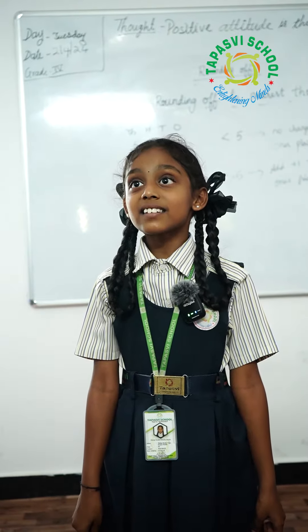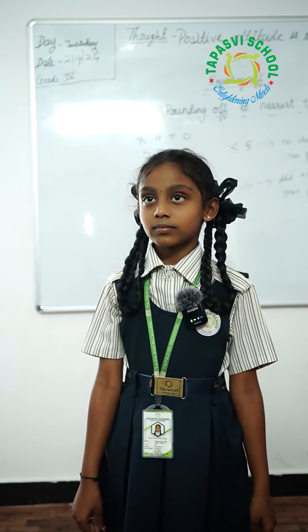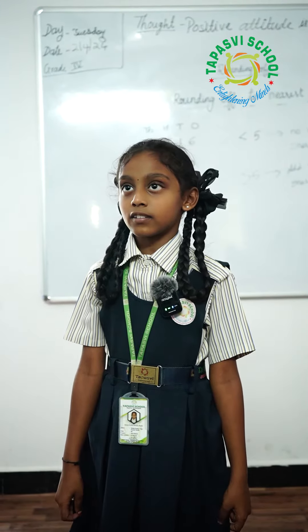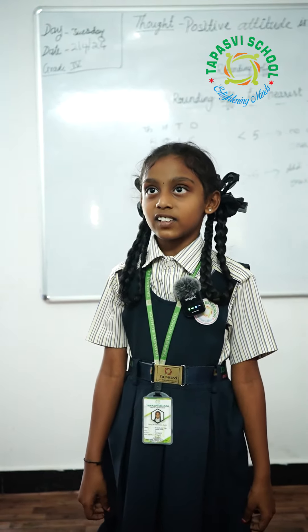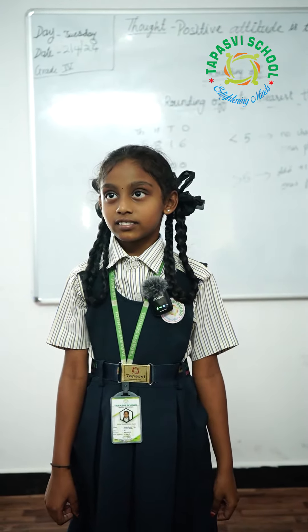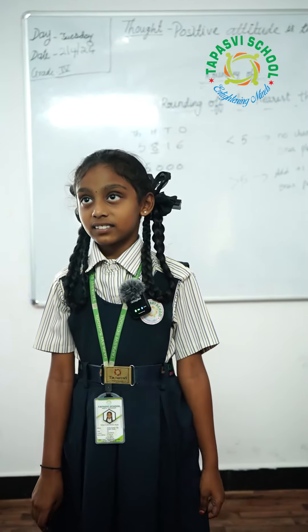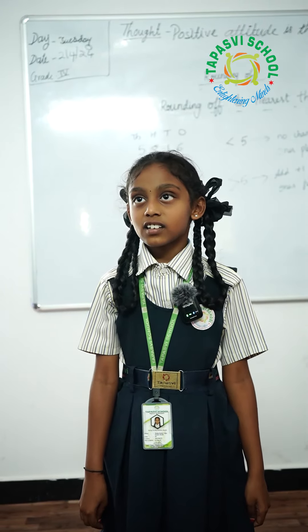What is division? Repeated subtraction is called division. Division can also be defined as equal sharing or equal grouping. The result of division is called? Quotient. The number left over after doing division is called? Remainder. That's correct.